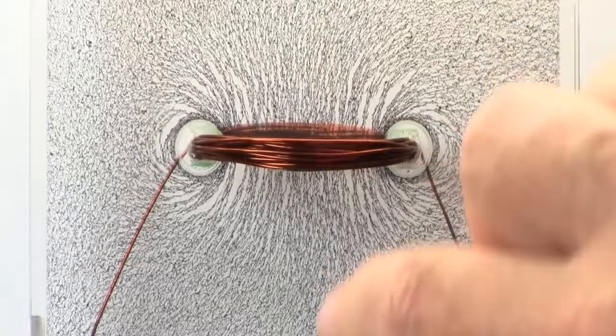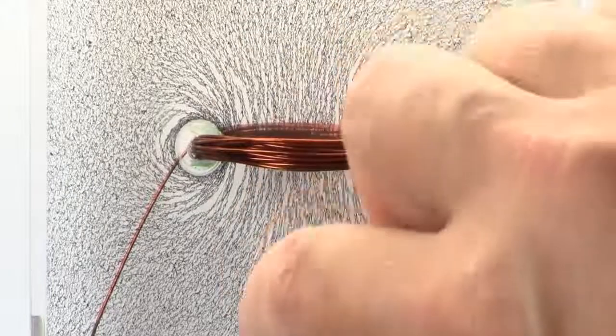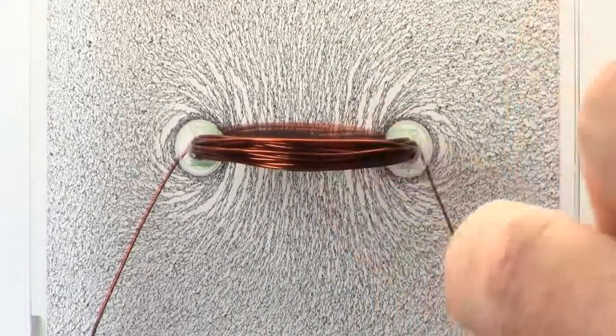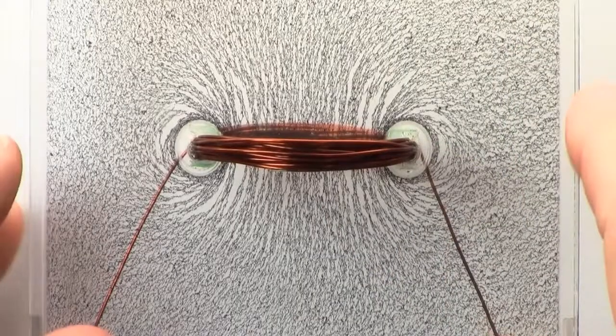Well, we can see that the iron powder is lined up down the center here, and then we're still getting this sort of circular shape around. Let's just have a look. Remember what it looks like.